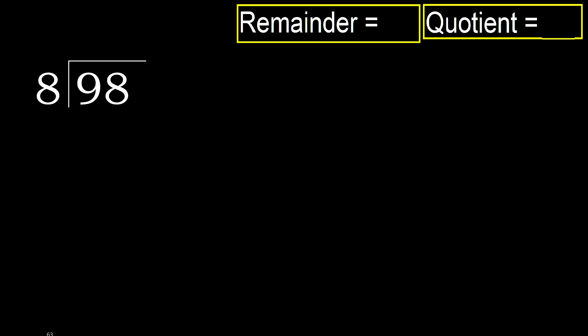98 divided by 8. 9 is not less, therefore with 9: 8 multiplied by which number is nearest to 9, but not greater?